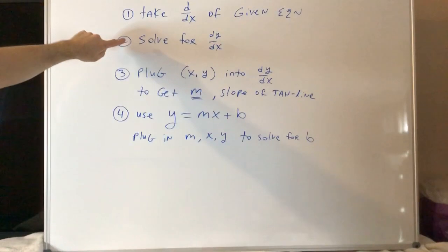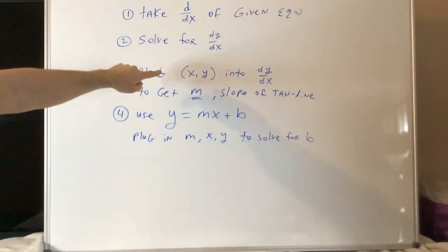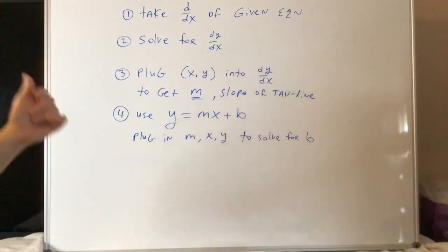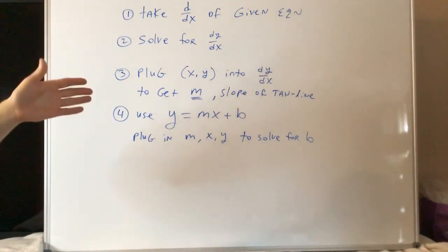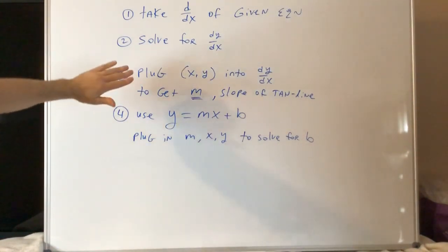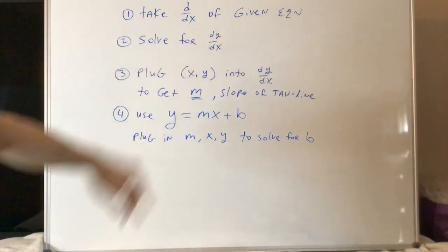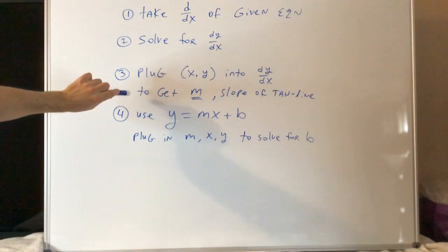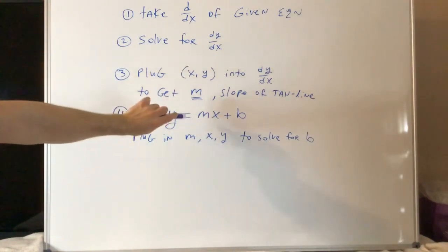So once you have your derivative, you're going to plug the point they gave you. They're going to give you an x and a y. They have to give you x and y. They can't just give you x and make you solve for y. That's the whole point. It's too complicated. So you plug your x and y into your derivative. dy/dx is your derivative. That will give you m, your slope of the tangent line.